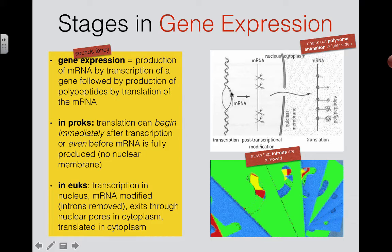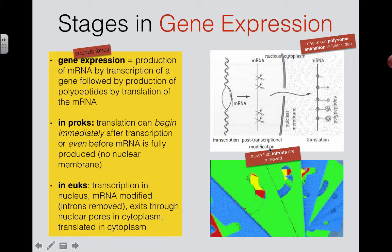We don't want to mess with the original gene because it's one of our only copies in the nucleus, so we use a copy called mRNA. When the mRNA comes off, we could deliver it straight to the ribosomes for translation, but in eukaryotic cells there is some modification that happens first.